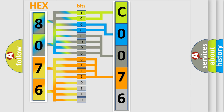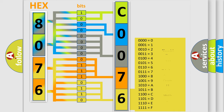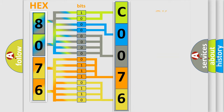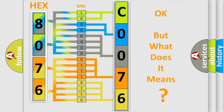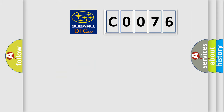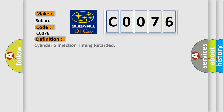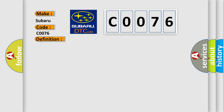A single byte conceals 256 possible combinations. We now know in what way the diagnostic tool translates the received information into a more comprehensible format. The number itself does not make sense to us if we cannot assign information about what it actually expresses. So, what does the Diagnostic Trouble Code C0076 interpret specifically for Subaru car manufacturers? The basic definition is: Cylinder 5 Injection Timing Retarded. Here is a short description of this DTC code.